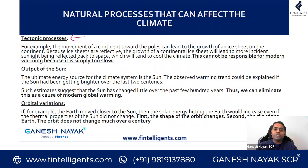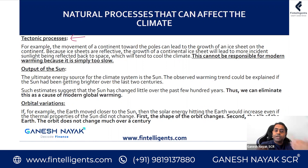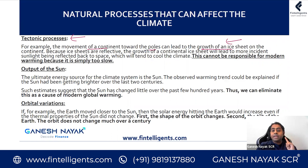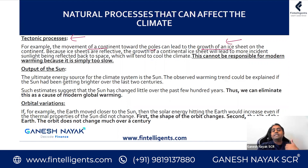The first is tectonic processes. The earth's plates are moving — historically, continents were not in the same shape as today. When they move, it impacts the atmosphere and can increase ice sheets in certain areas. Movement of a continent towards a pole can lead to growth in the ice sheet there. Ice is reflective — sunlight hitting ice reflects back, while sunlight hitting ocean is absorbed because ice is light in color. More reflected sunlight should tend to cool the climate. However, we don't see such drastic continental plate changes in the last 200-300 years, so we can rule out tectonic processes.